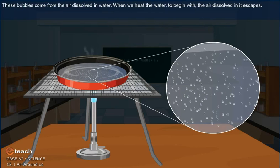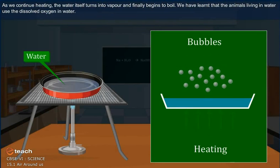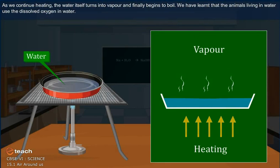When we heat the water, to begin with, the air dissolved in it escapes. As we continue heating, the water itself turns into vapor and finally begins to boil. We have learned that the animals living in water use the dissolved oxygen in water.